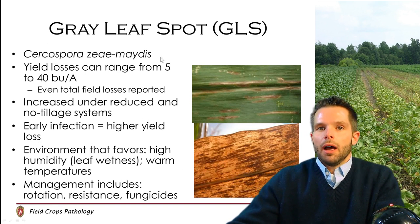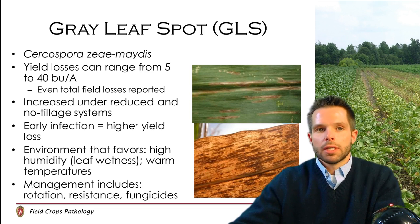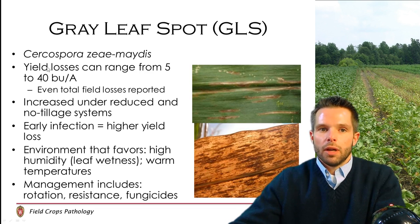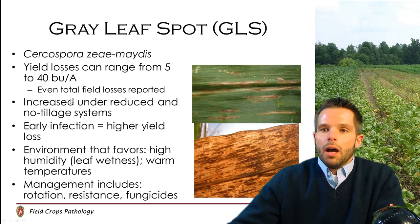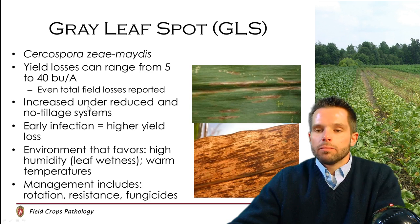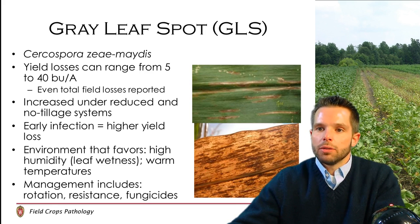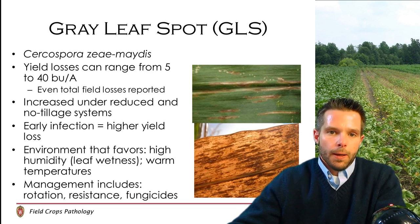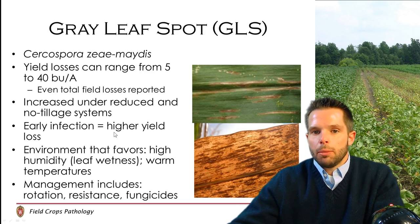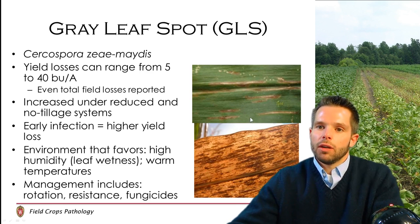An occasional disease that we see in Wisconsin would be gray leaf spot. This will not be present every year, but occasionally we do find it along the southern tier of counties in the state. It is caused by Cercospora zeamaydis and yield losses when it does come in can be pretty significant. It is a pathogen also typically borne on residue left in the field, so it can be worse in no-till type systems or in fields where we have very tight rotations between corn crops. Heat and high humidity typically favor this particular pathogen, which is different than northern corn leaf blight which favors cooler, wetter conditions.